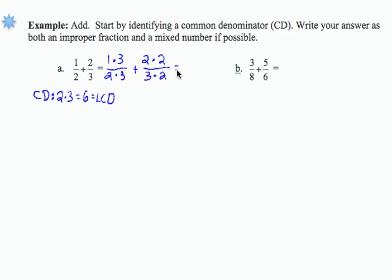Now if I multiply, I get 1 times 3 is 3, 2 times 3 is 6, plus 2 times 2 is 4, and 3 times 2 is 6.